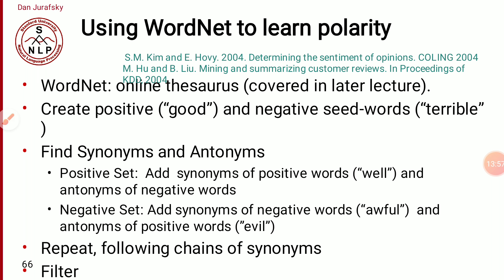The third method uses WordNet to learn polarity. As we know, WordNet is an online thesaurus. It is also a semi-supervised method: we start with a seed set of positive words, then find antonyms of those positive words to add to the negative side. For the negative set, we add synonyms of negative words. For example, for the word 'awful,' we add its antonyms as positive. Likewise, we can grow the lexicon by repeating this chain of synonyms and antonyms multiple times, and finally build a full lexicon.